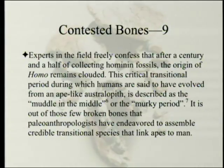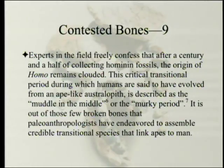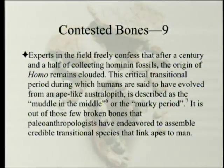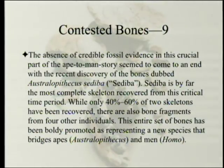Experts in the field freely confess that after a century and a half of collecting hominin fossils, the origin of Homo remains clouded. This critical transitional period — during which humans are said to have evolved from an ape-like australopith — is described as 'the muddle in the middle' or 'the murky period.' It is out of those few broken bones that paleoanthropologists have endeavored to assemble credible transitional species. The absence of credible fossil evidence seemed to have come to an end with the discovery of the bones dubbed Australopithecus sediba.